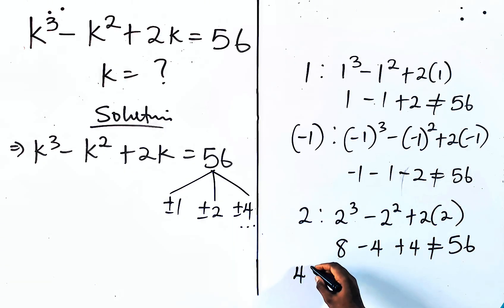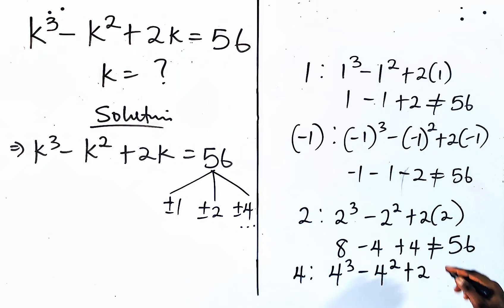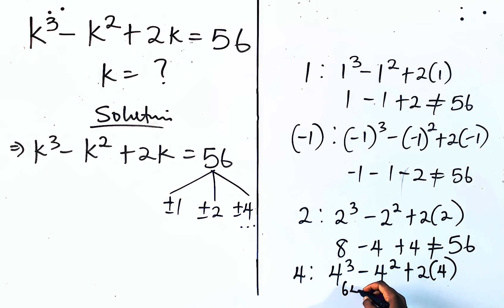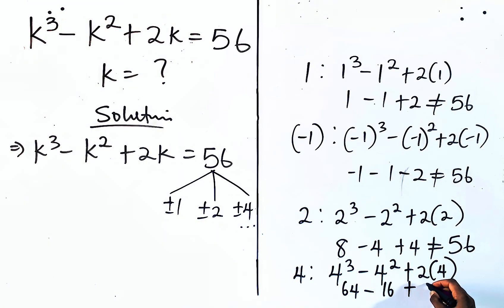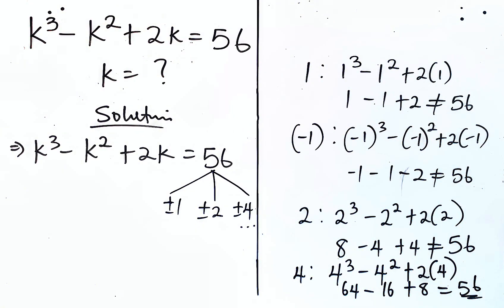Now let's check for when k is 4. We have 4 cubed minus 4 squared plus 2 multiplied by 4. So 4 cubed is 64, then this will give us 16, multiply this you have 8. This subtract this, add this gives us 72, take away this gives us 56. You see that this is also equal to what we have on the right side, so k being 4 is a solution.